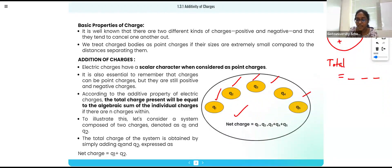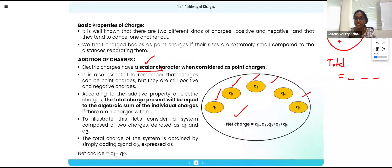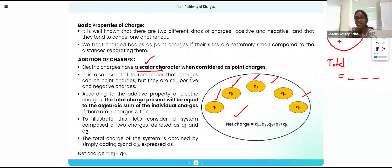Electrical charge has a scalar character. Scalar means having only magnitude, while vector has magnitude as well as direction. When we talk about charge, we only say whether it is positive or negative — we don't say it is moving left or right. So the additive property falls under scalar property.